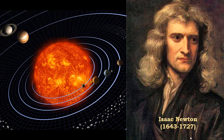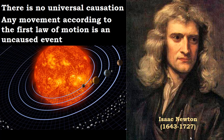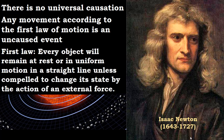Finally, Newton proposed that there is no universal causation — very different from the materialistic philosophers. He proposed that any movement according to the first law of motion is an uncaused event. The first law of motion says that every object will remain at rest or in uniform motion in a straight line unless compelled to change its state by the action of an external force.